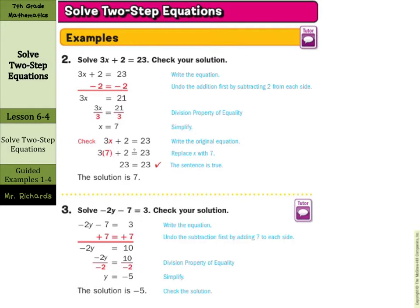In these two examples, same types of process. To undo the addition, we're going to subtract. We're left with 3x equals 21. Then they divided by 3 to undo the multiplication, and x equals 7. And you can see the check step.